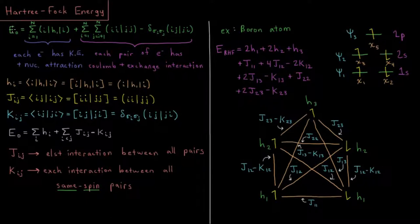Over the last few videos we've been showing how the energy of our ground state Hartree-Fock determinant is equal to the sum of a few terms. We have a sum over all electrons, i equals 1 to n, number of electrons,